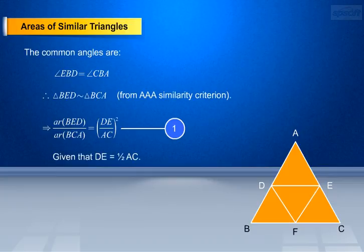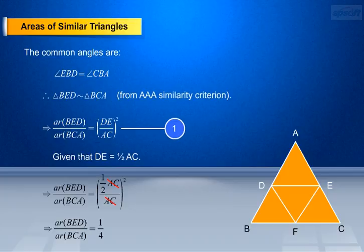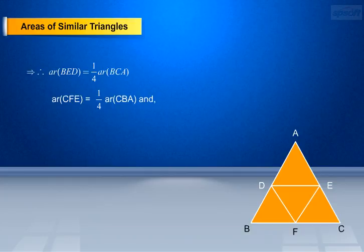Given that DE equals half AC. By substituting the above value in equation 1 we get: AR of BED by AR of BCA equals (½AC/AC) whole square. This implies AR of BED by AR of BCA equals 1/4. This implies AR of BED equals 1/4 × AR of BCA. Similarly, AR of CFE equals 1/4 × AR of CBA, and AR of ADF equals 1/4 × AR of ABC.